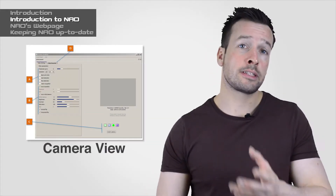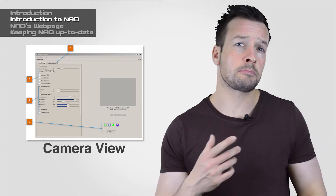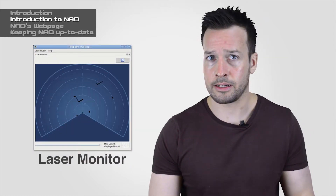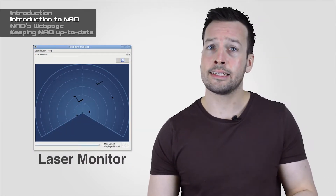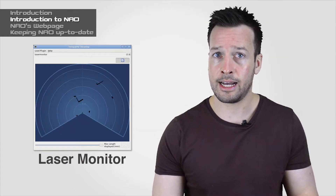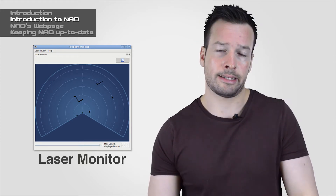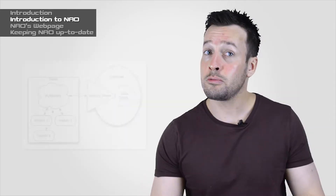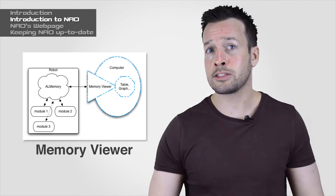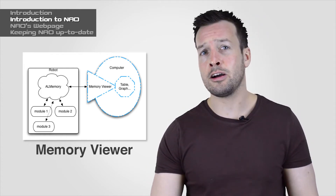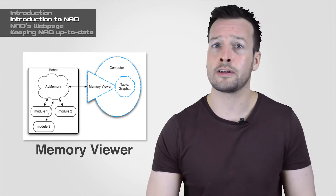Three plugins are available. The first plugin is called Camera Viewer, which allows you to configure robot cameras, display what they see, take pictures or record videos. The second one is Laser Monitor, for people who have a laser head version of the NAO — this plugin allows you to display what is seen by the laser telemetre. The third one is called Memory Viewer, which allows you to watch the data held by the AL memory module of a given NAOqi key.